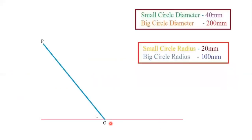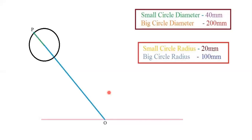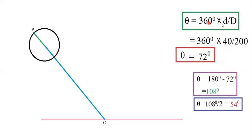Mark a point on the reference line. The bigger circle radius is 100 mm, so the distance from O to P is 100 mm. Using the formula theta = 360 × (40 / 200), you get 72 degrees. Since this is a straight line (180 degrees), subtract 72 from 180 to get 108 degrees, then halve it to get 54 degrees.